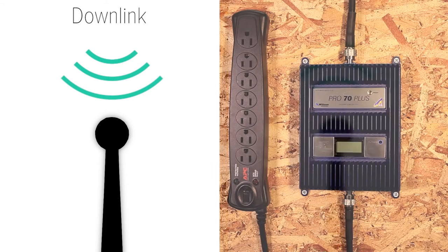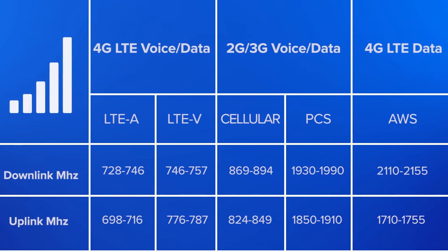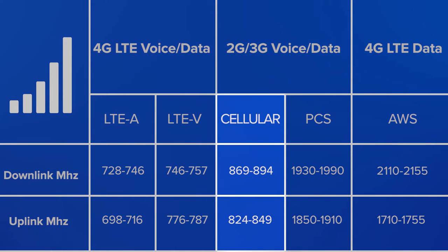Increasing downlink is the main objective of the amplifier. Carriers use different bands to transmit different types of signal. If you look at this chart, you can see how it's broken down. Cellular, or 800 MHz, is the most used band for cellular voice and 2G or 3G data, like texts. PCS, or 1900, is also used for this,